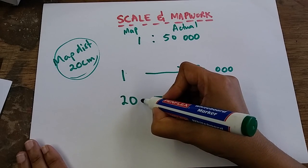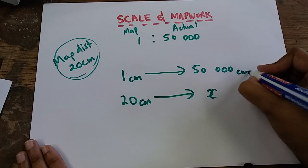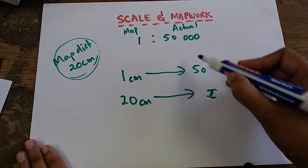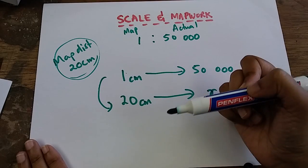Now, because my map distance is in centimeters, all my measurements will be in centimeters. So to solve for X, I can either cross multiply or I can ask myself: to go from 1 to 20, what did I do? 1 multiplied by 20 gives me 20.